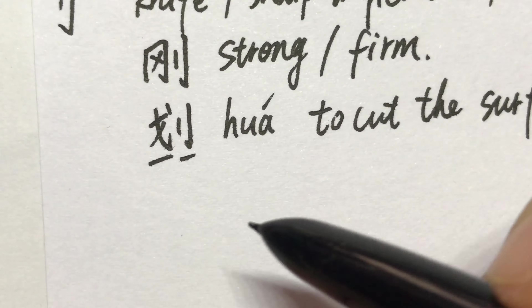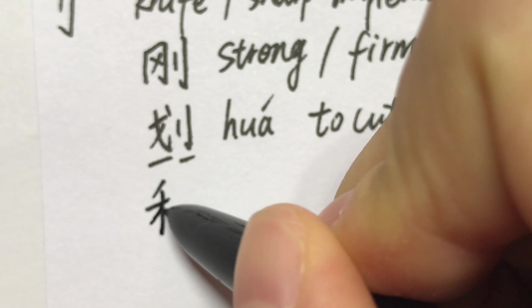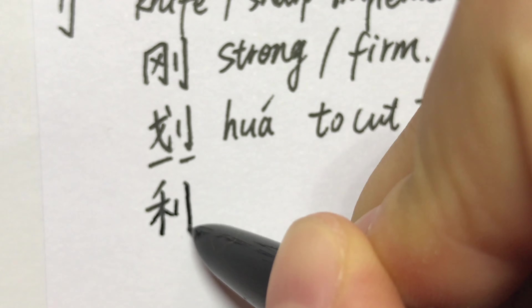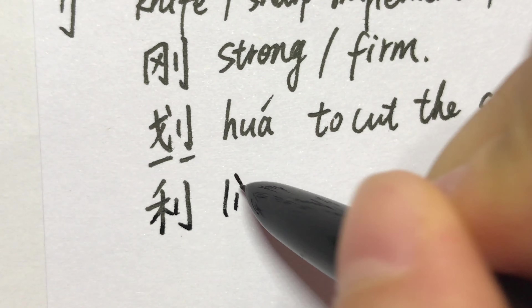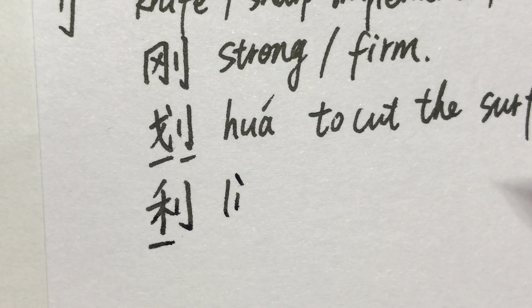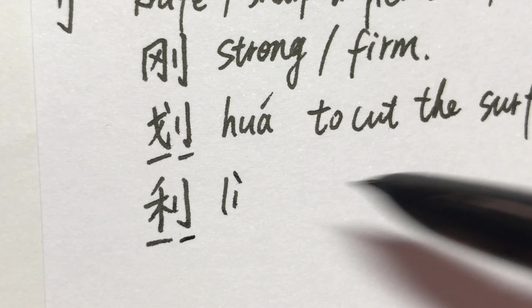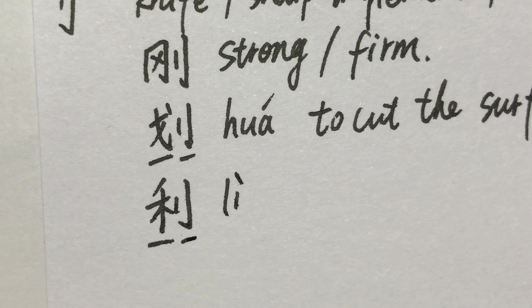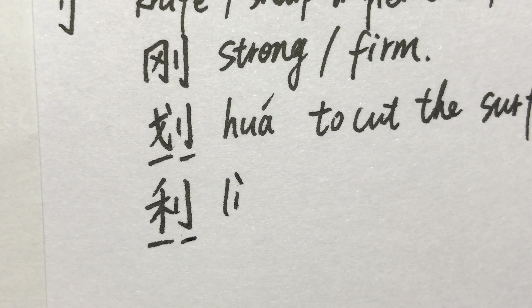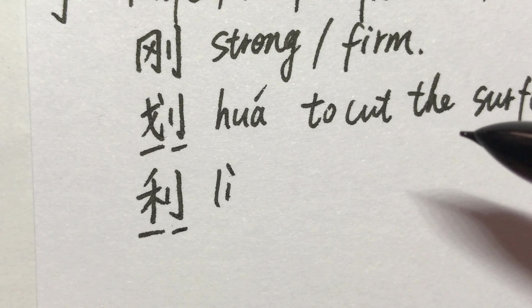Next character: 利 (lì). 禾 on the left side means millet. With a knife, to cut millet or grain with a knife — it's harvest. 利.